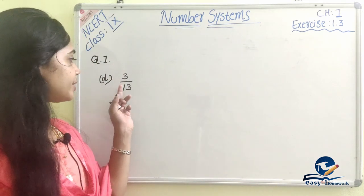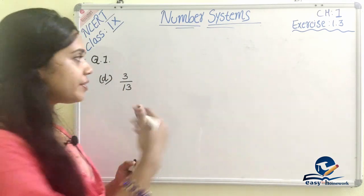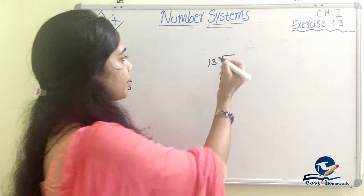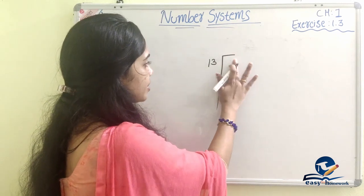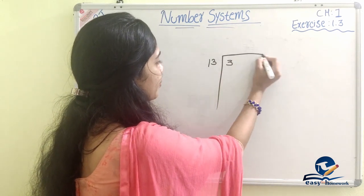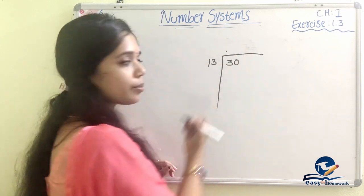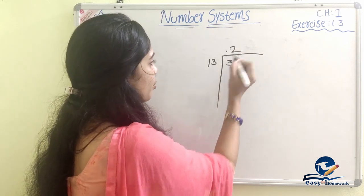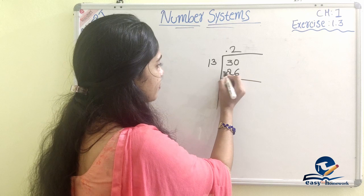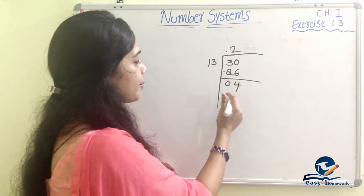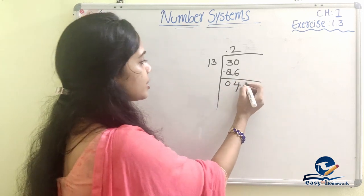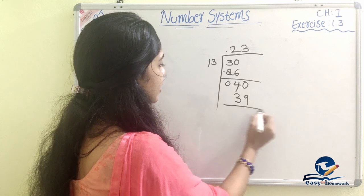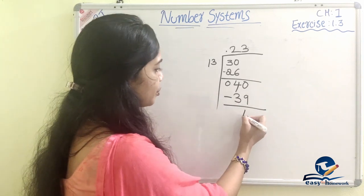The next question is 3 by 13. We divide 3 by 13. 3 is smaller than 13, so we don't go — write 0. Take 30: 13 goes 2 times, giving 26. Remainder 4. Then 4 is not enough, so 0. Then 40: 13 goes 3 times, giving 39. Remainder 1.